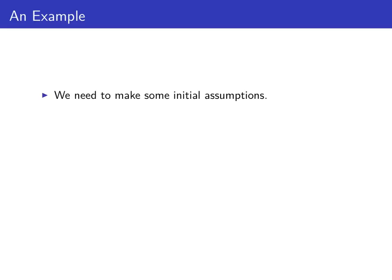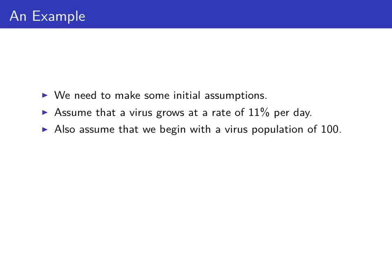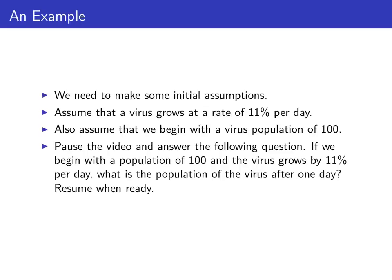We need to start with some initial assumptions. We'll assume that a virus grows at a rate of 11 percent per day and we'll assume that we're going to start with a virus population of 100. Pause the video for a moment and consider the following question: we have a population of 100 and the virus grows by 11 percent per day. What would the population be after day one? Resume the video when you're ready.